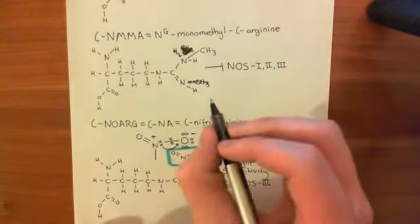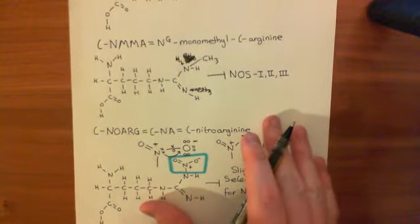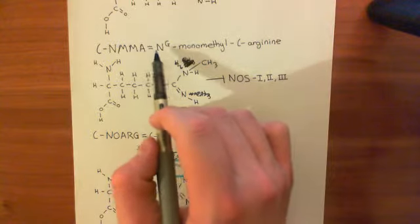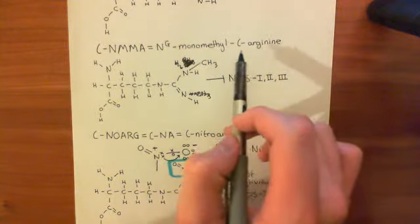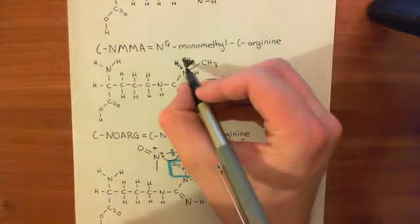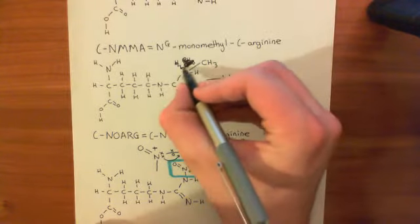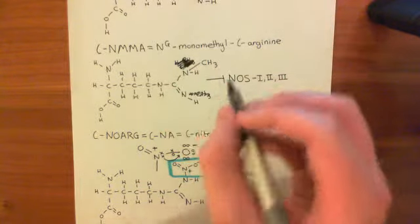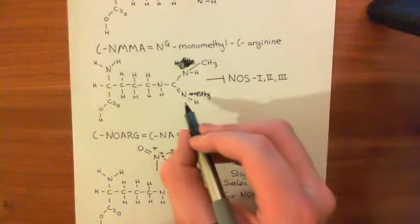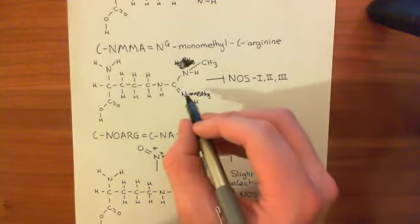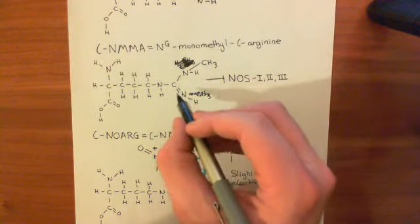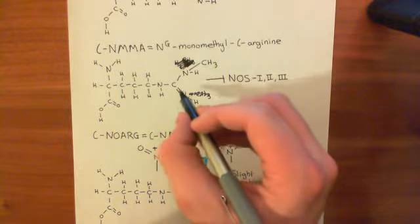I now need to explain why the notation lists this as NG-monomethyl L-arginine when this methyl group apparently hasn't been added to the guanidino nitrogen. It's because the structure resonates, basically.